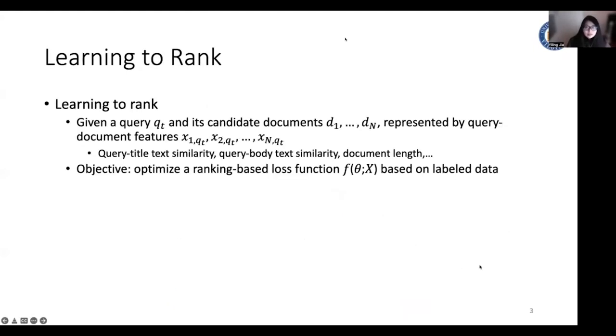So in learning to rank, each query document pair is represented by a feature vector, which may contain the query title text similarity or the document length. And the objective of learning to rank is to optimize a ranking based loss function f(D,X) based on the labeled data.